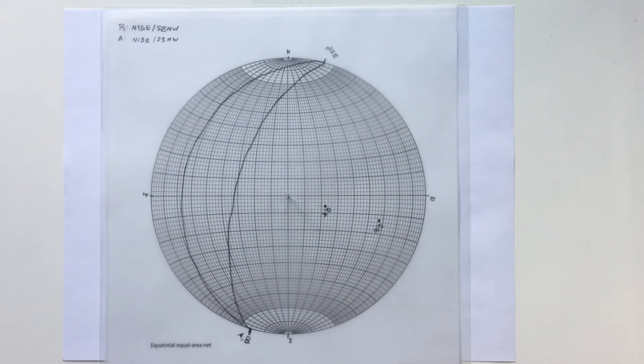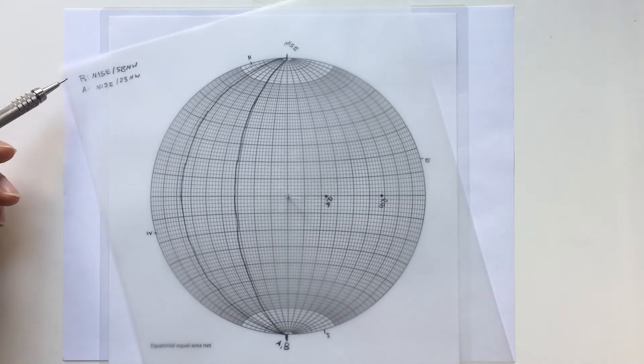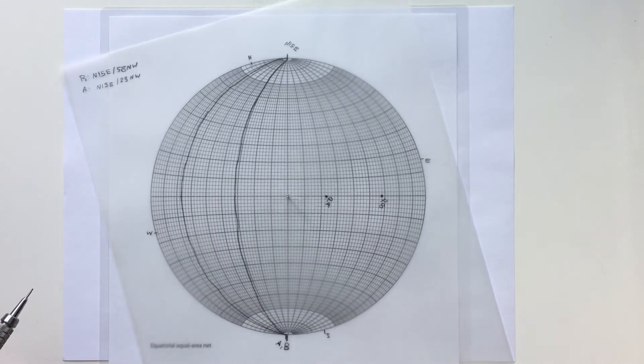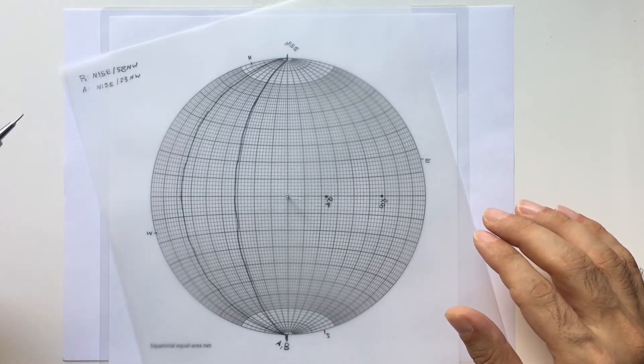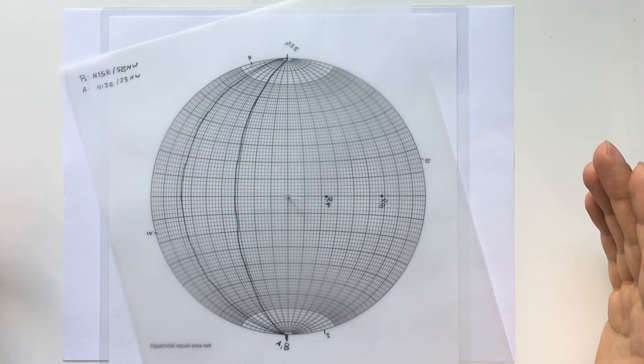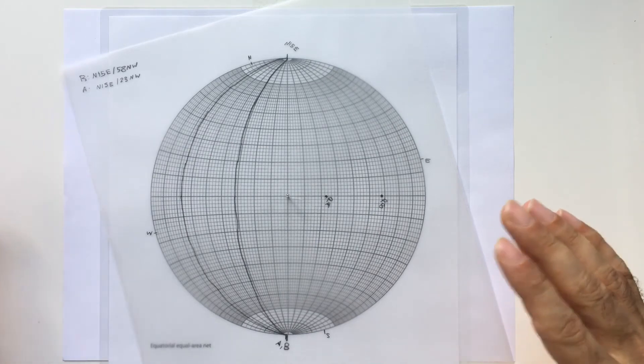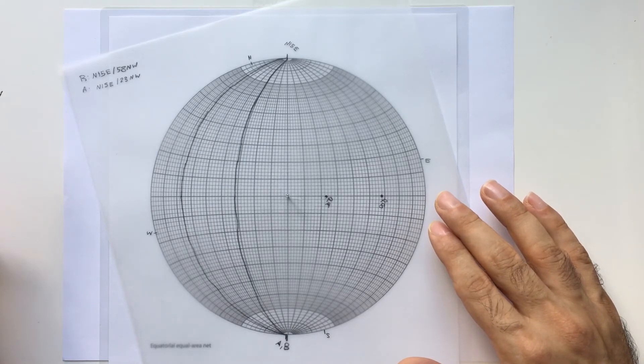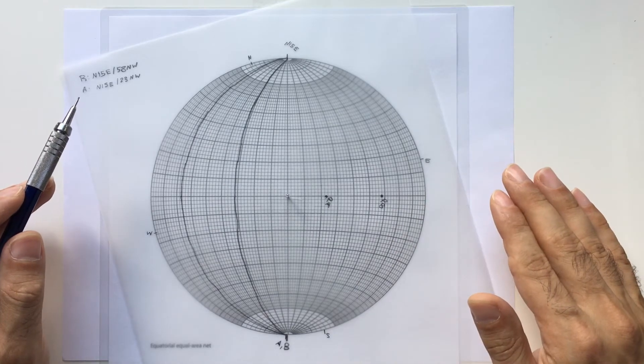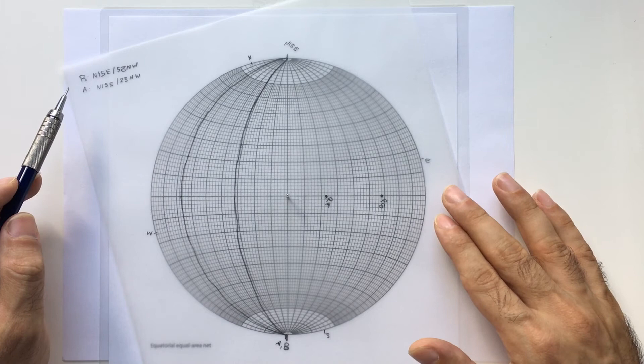The question asks me what was the attitude of the bedding below the unconformity after the first phase of tectonics. We have two phases of tectonics because the unit below has a different dip and strike. In this example, the strike is the same, but in others it might be different. After the first phase and before the second phase, the unit above the unconformity should be flat.